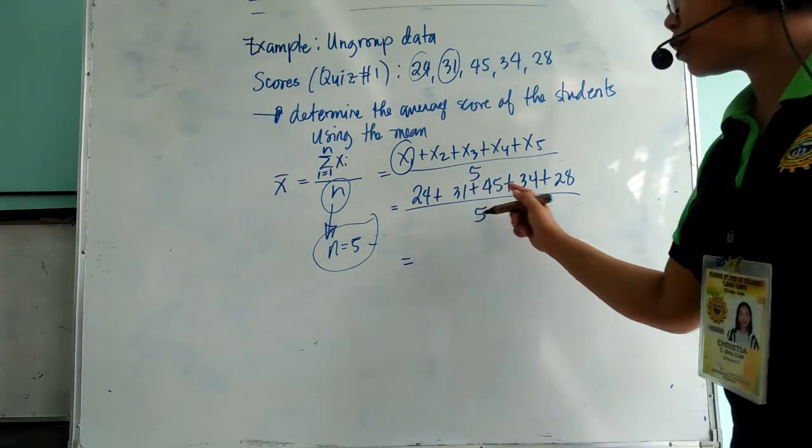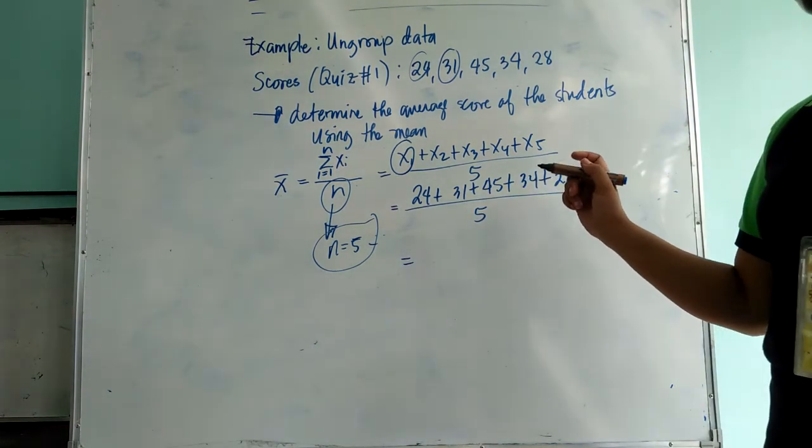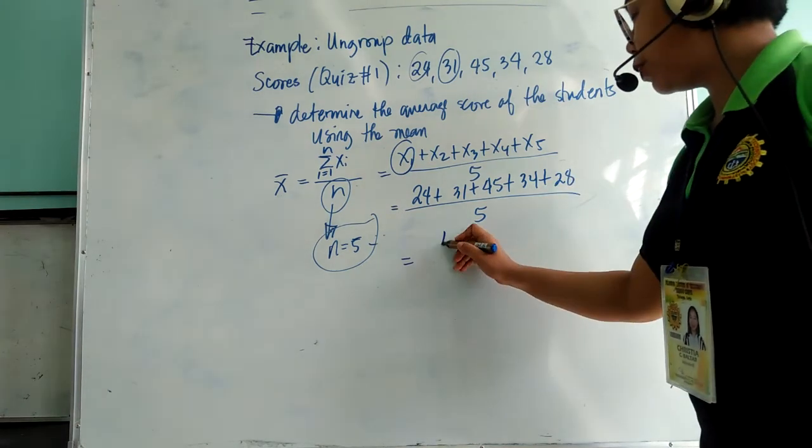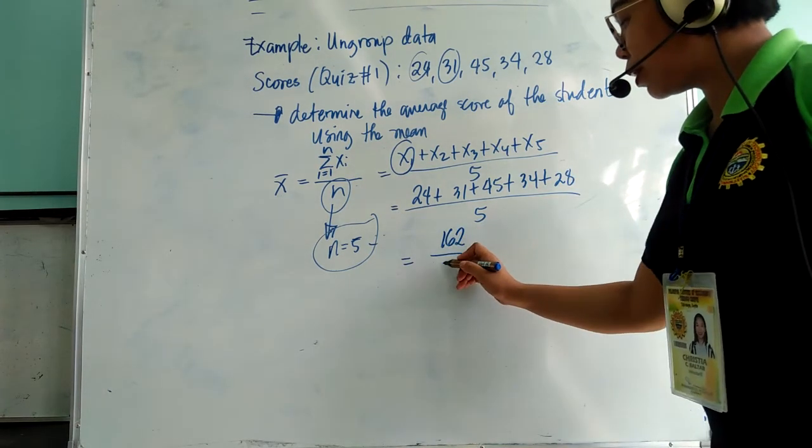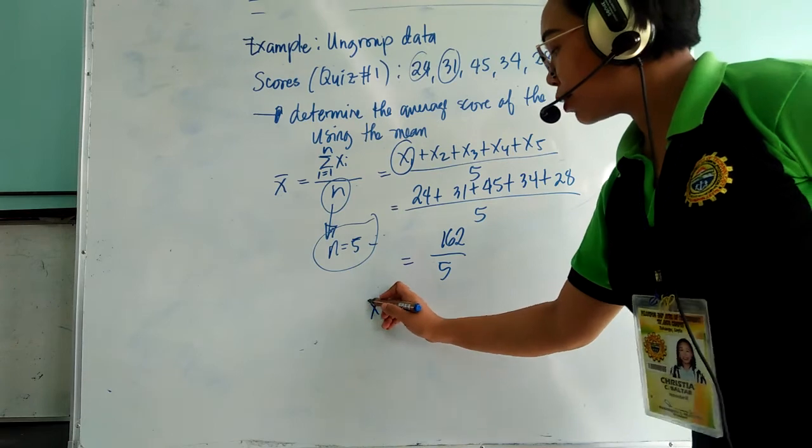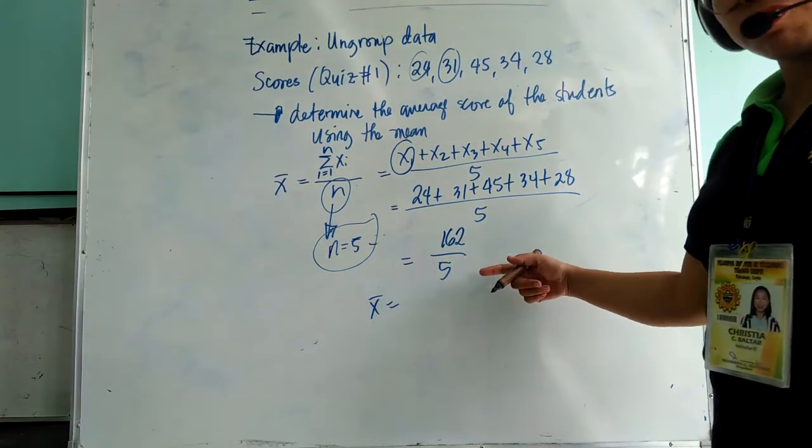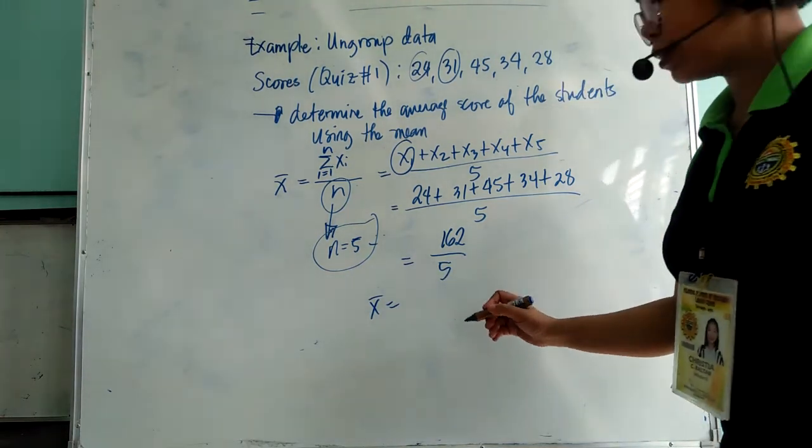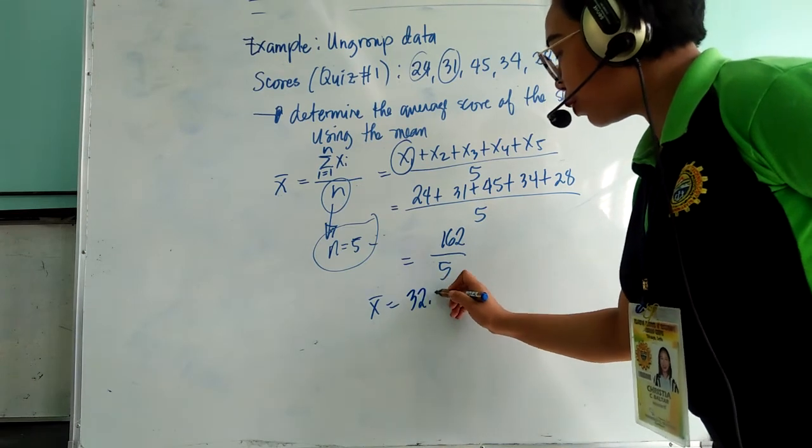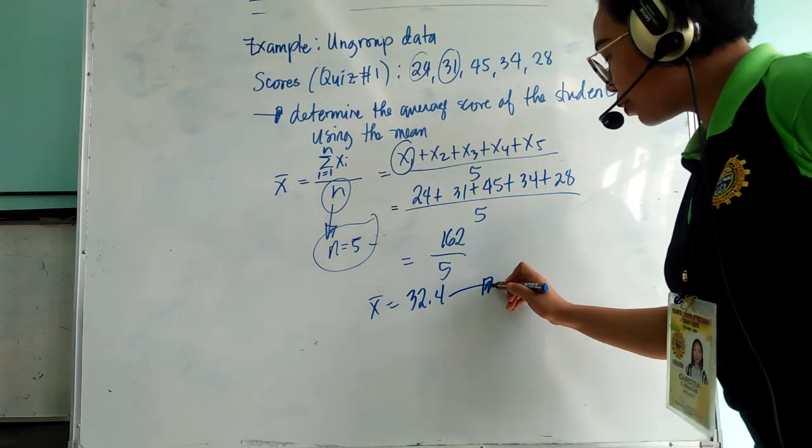So if you will use your calculator to get the sum, you will get a total of 162 divided with 5. If you divide 162 by 5, you will get 32.4.